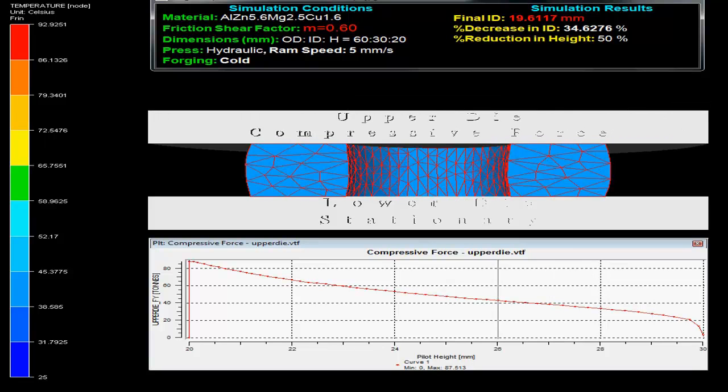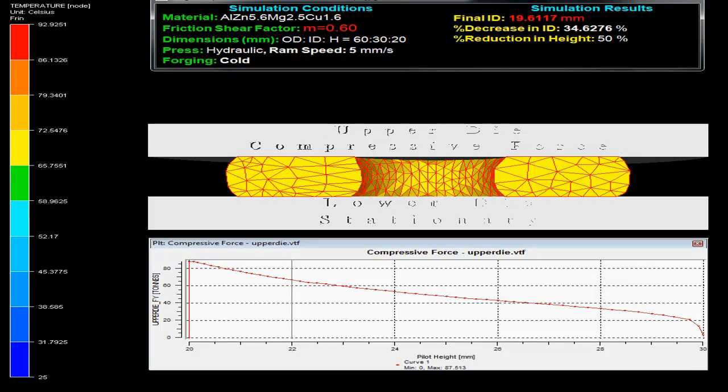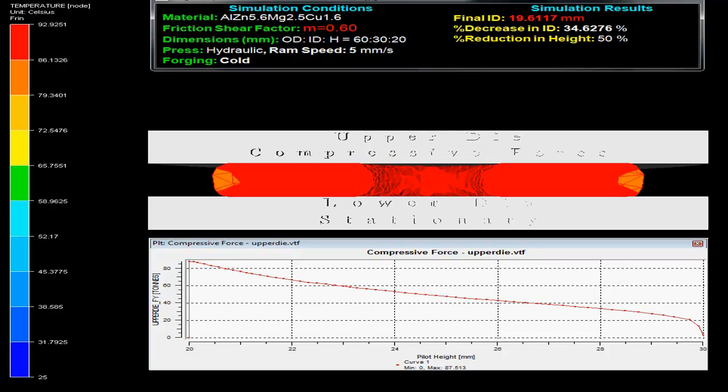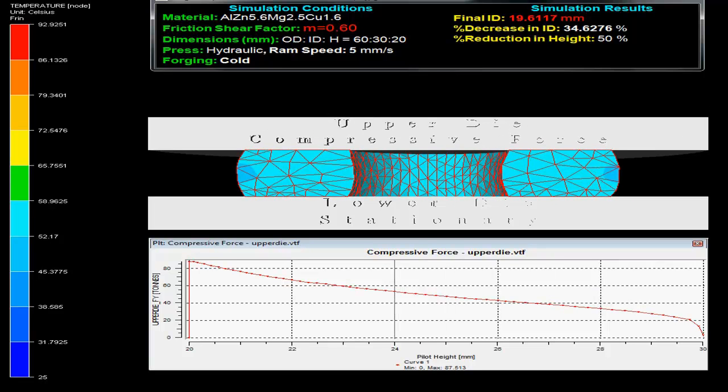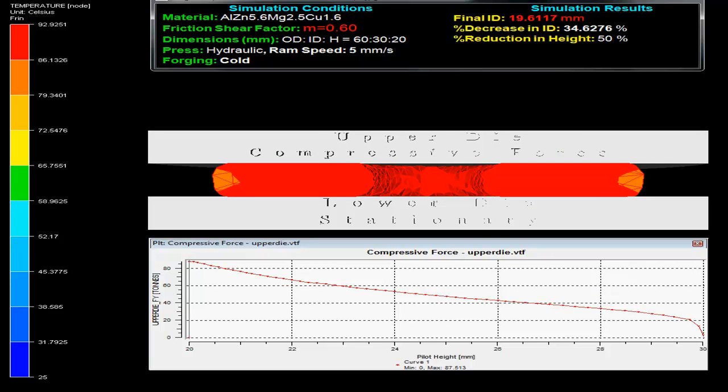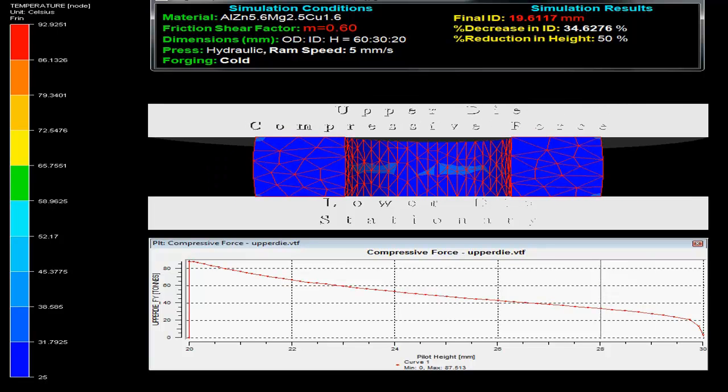The ring compression test has been widely used to evaluate friction conditions in metal forming processes. The video shows a short ring specimen plastically compressed between two flat dies, with the lower die stationary and upper die movable.